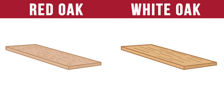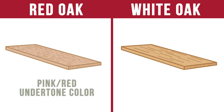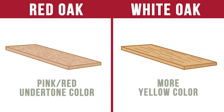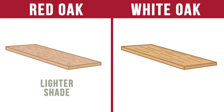First, you can quickly spot a difference in the color of each species by looking at it in its natural, unfinished state. Red Oak has more of a pink or slightly red undertone to its color, while white oak appears to be more yellow. Red Oak also tends to have a lighter shade than white oak flooring, which appears a little darker.